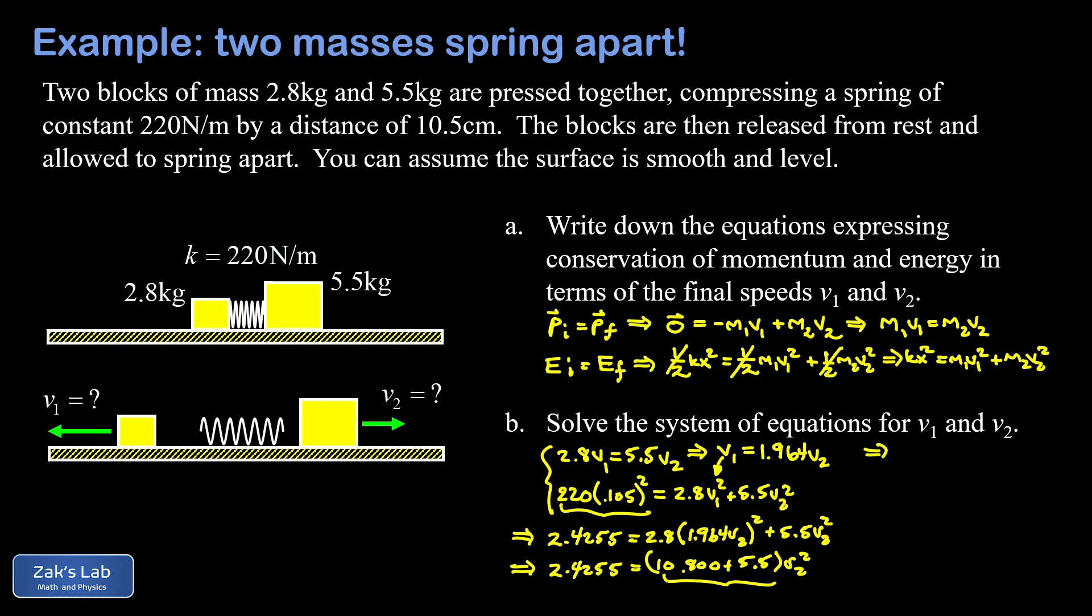This gives me an answer for v2 of 0.386 meters per second. Now I take that v2 and plug into our relationship between v1 and v2, so v1 is 1.964 times v2, and when I run the numbers to three significant digits I get 0.758 meters per second. I think that's a fine way to solve the problem in a trigonometry-based physics class.